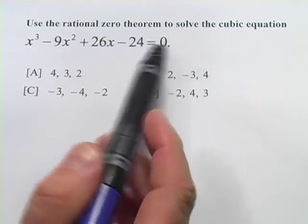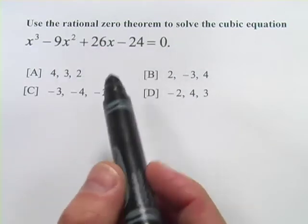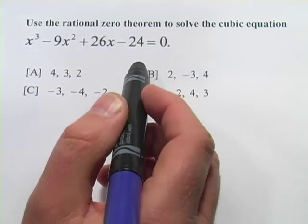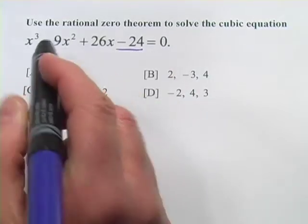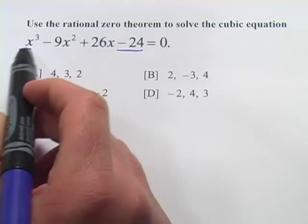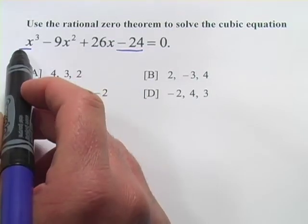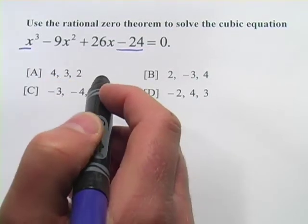What the rational zero theorem says is that the possible roots here are all of the factors of the constant term over all of the factors of the highest term. And since our highest term, the coefficient is 1, we don't have to worry about that.